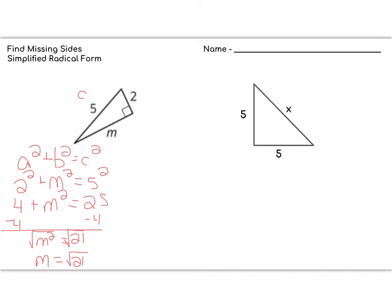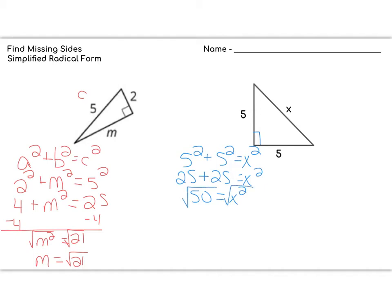The next triangle has legs of 5 and 5, and the hypotenuse is x. So this is going to be 5² + 5² = x². We know that 5² is 25, and 25 + 25 is 50. We take the square root of both sides, and we're not going to plug it into the calculator. We know this is really close to 7, because 7² is 49, but we're going to leave it as the square root of 50.